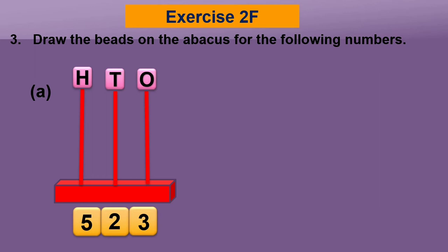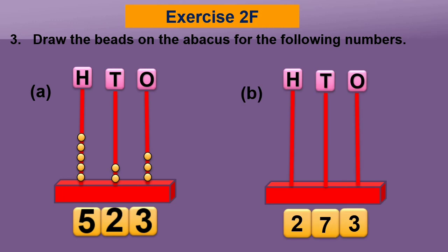In the number five hundred twenty-three, there are three ones, two tens, and five hundreds. Draw three beads in the ones spike: one, two, three. Two beads in the tens spike: one, two. And five beads in the hundreds spike: one, two, three, four, five.